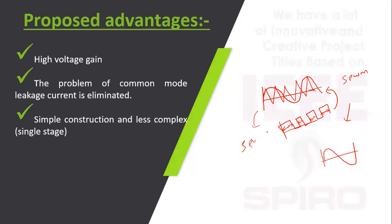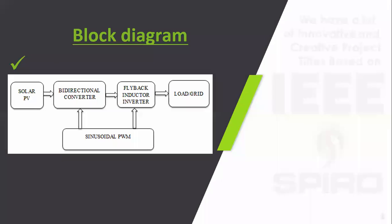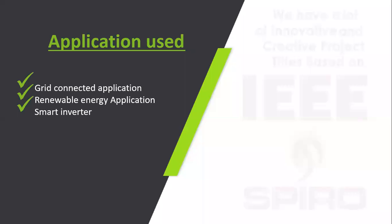In the proposed converter, the solar panel is connected to the bidirectional converter and flyback inductor circuit, combined as a single stage. A block diagram connects the stage to the grid or load, with sinusoidal PWM providing the control pulses. Zero leakage current is maintained by connecting the solar panel and grid to a common ground, making it suitable for grid-connected applications.